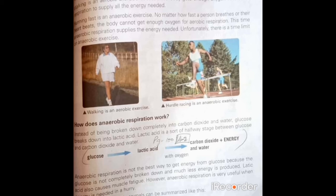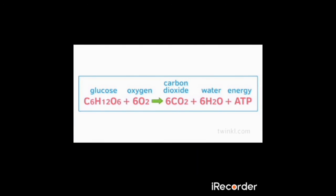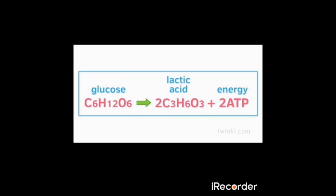In anaerobic respiration, glucose is first broken down into lactic acid, then carbon dioxide and energy are released. Lactic acid is not good for your health because it causes muscular damage and muscular fatigue. Anaerobic respiration is of very short duration — after that, anaerobic respiration stops and oxygen supply is restored. So in summary: glucose is converted to lactic acid, which produces energy. The equation for aerobic respiration is: glucose plus oxygen yields carbon dioxide, water, and energy. The equation for anaerobic respiration is: glucose yields lactic acid plus energy.